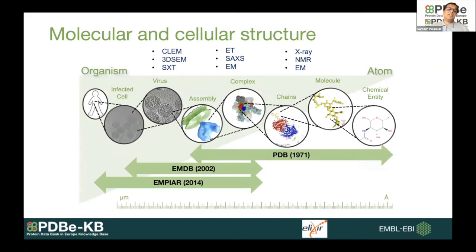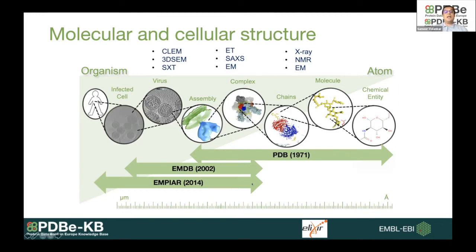Let's start by understanding where molecular and cellular structures are archived. The PDB, the oldest archive of structural data, was established in 1971 and archives atomic resolution structures. EMDB, established in 2002, archives data from electron microscopy experiments — the electron potential maps go into EMDB, and associated models go into PDB. EMPIAR is the latest archive, storing raw images from electron microscopy data and linking them back to EMDB.